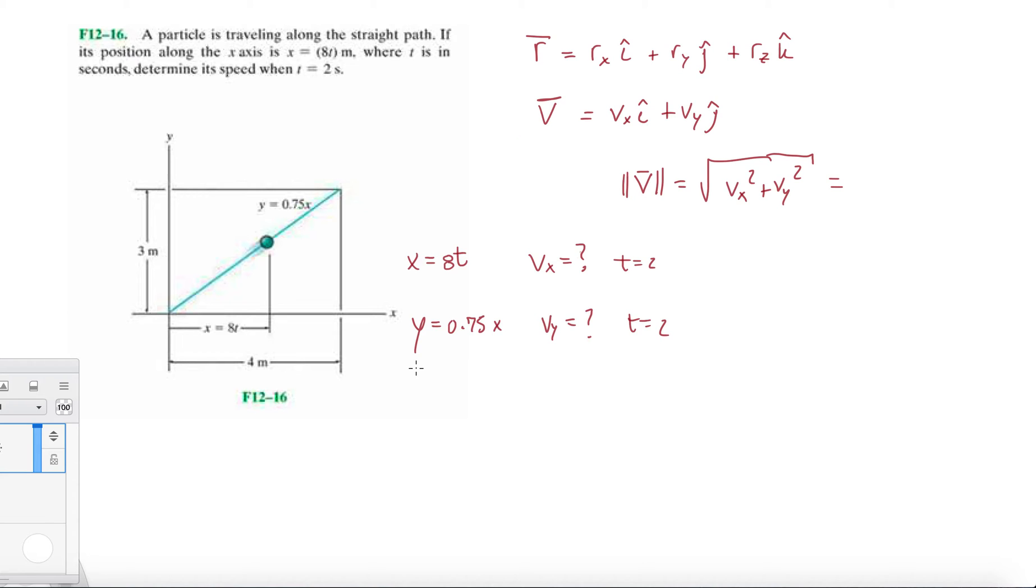First, I'm just going to figure out what y is in terms of time, so that's 0.75 times 8t, and that is 6t. So we have our two functions, x and y, as a function of time. What I'm going to do here is figure out what Vx is. That's just taking one time derivative, dx/dt equals 8, and the same thing for y. Take one time derivative, and you get 6.